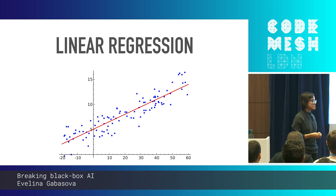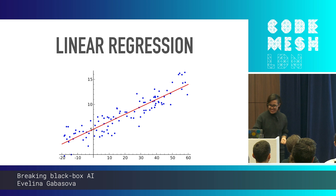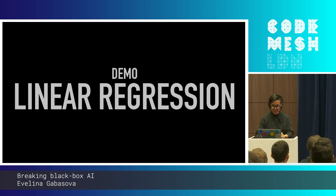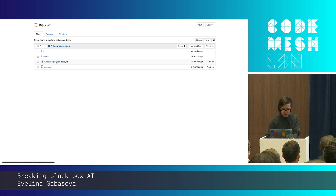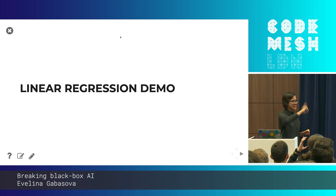Do you think linear regression is AI? Well, it depends on if you want to sell it to someone or not. So what do you do with linear regression? You basically take some inputs and compute a linear combination of them to get some output. I don't want to just talk — I want to show you some practical demos. That's why I have a Jupyter notebook here, because of course I am a cool data scientist.